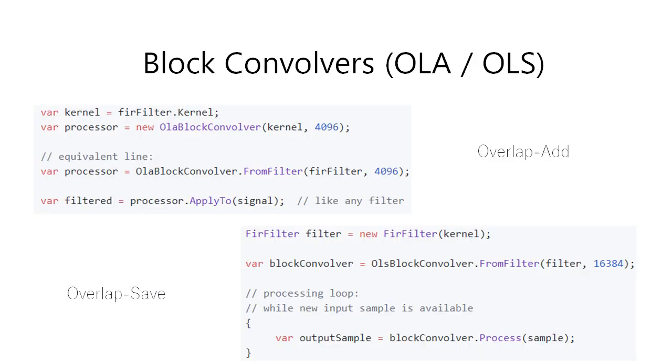First, let's say a couple of words about block convolvers. You can choose between overlap add block convolver and overlap save block convolver. Both of these classes implement iFilter and iOnlineFilter interfaces. Hence, they can be used as filters in offline and online processing. Note that the output of block convolvers will always be late by the number of samples returned by the property named hop size.